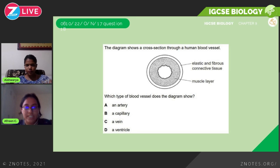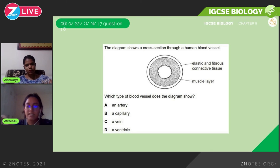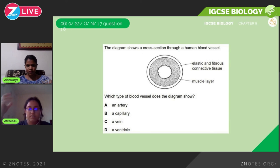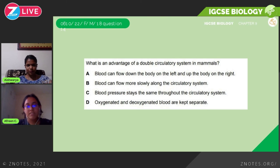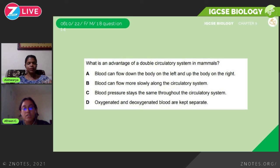October/November 2017, Question 18: 'The diagram shows a cross-section through a human blood vessel' — with elastic and fibrous connective tissue walls, a muscle layer, small diameter, and thick walls. These specifications describe an artery. February/March 2018: 'What is an advantage of a double circulatory system in mammals?' The correct answer is that oxygenated and deoxygenated blood are kept separate — the other options describing slower flow or uniform pressure are not ideal.